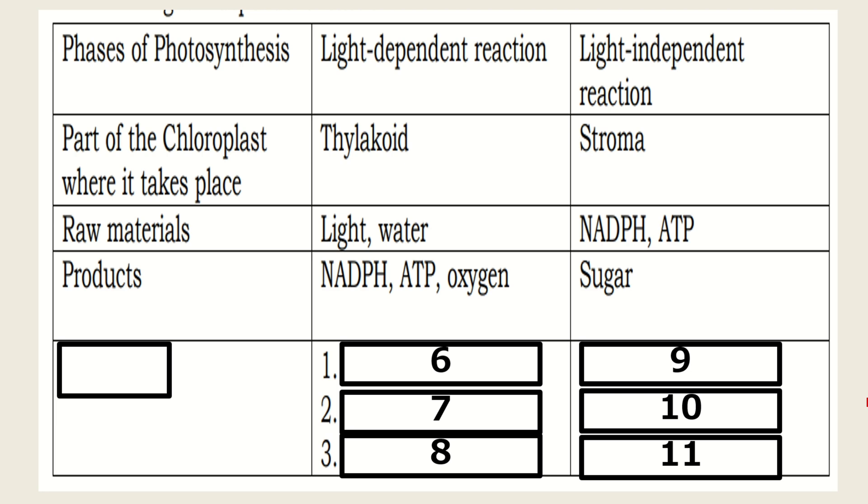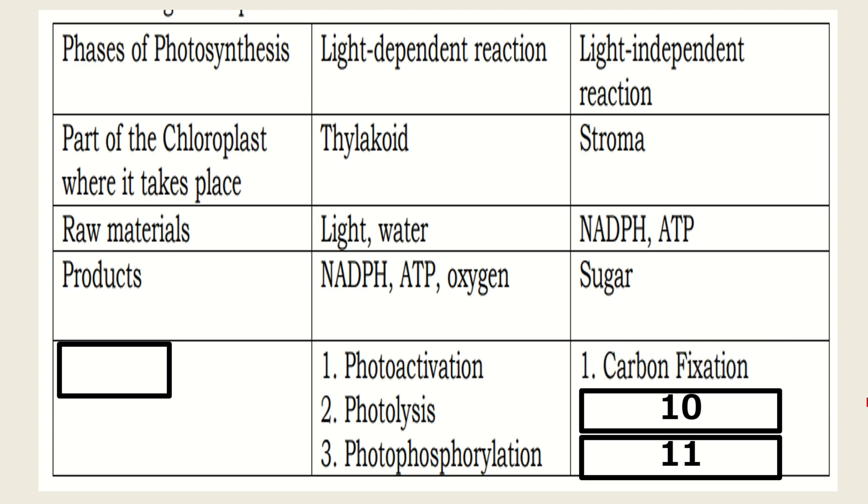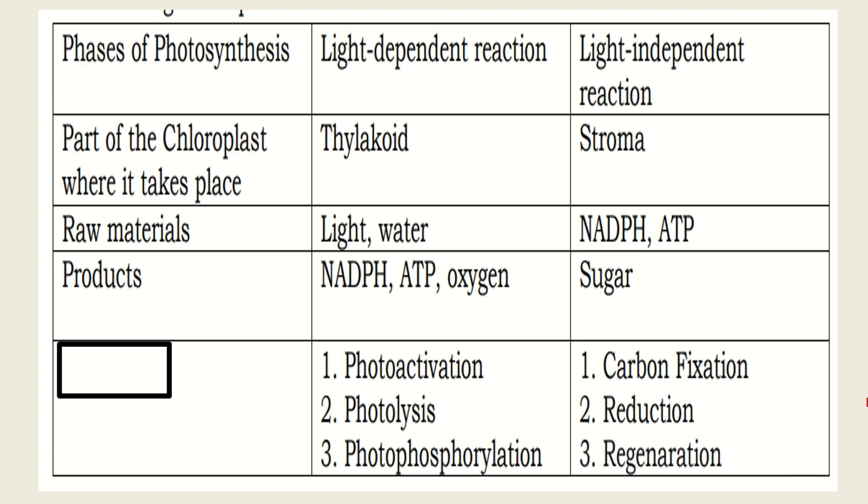The processes involved in the light-dependent reaction are photo-activation, photolysis, and photophosphorylation. In the Calvin cycle or light-independent, the processes involved are carbon fixation, reduction, and regeneration.